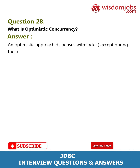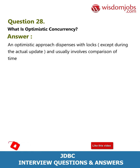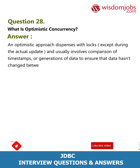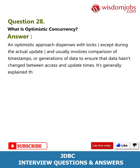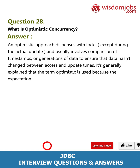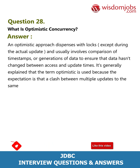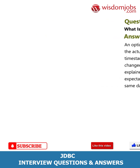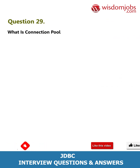Question 28: What is optimistic concurrency? Answer: An optimistic approach dispenses with locks except during the actual update and usually involves comparison of timestamps or generations of data to ensure that data hasn't changed between access and update times. The term 'optimistic' is used because the expectation is that a clash between multiple updates to the same data will seldom occur.